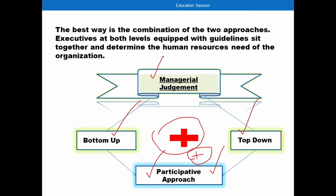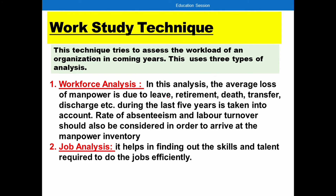Managerial judgment is suitable for small organizations because the number of employees is smaller. In large organizations there are more employees, more ideas, and decision-making takes more time. The second method is work study techniques. Under work study, we assess what work will come in the coming years. We focus on HR within three analyses.